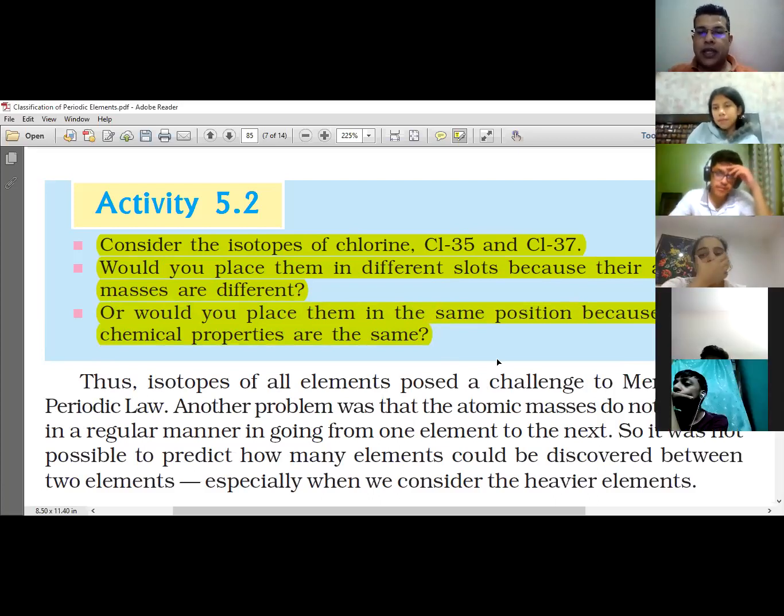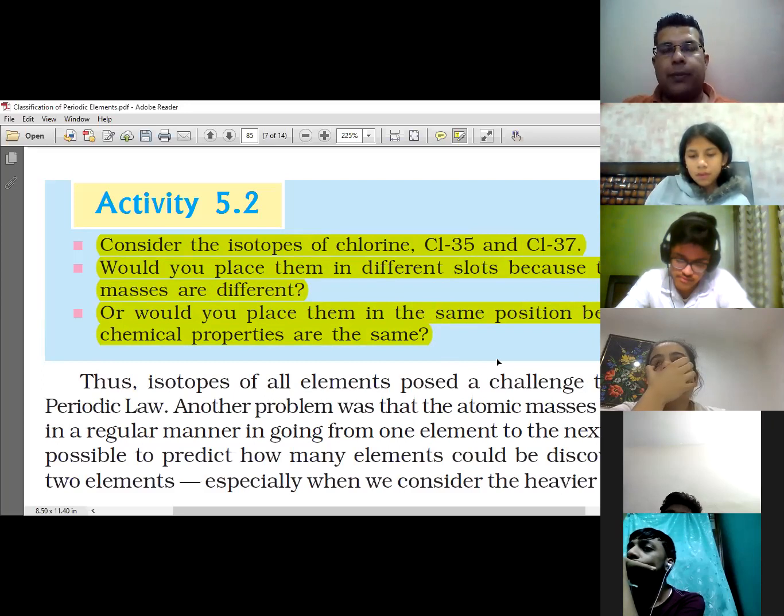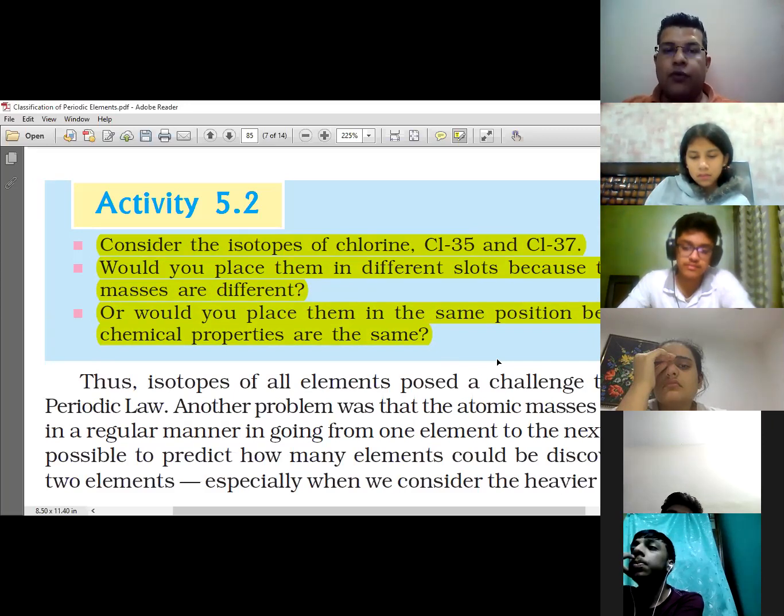They looked at chemical properties and atomic masses as the base for their periodic table. But in the Cl-35 and Cl-37 case, should they give different slots because atomic masses are different, or should they give same slots because the properties of all elements are similar?